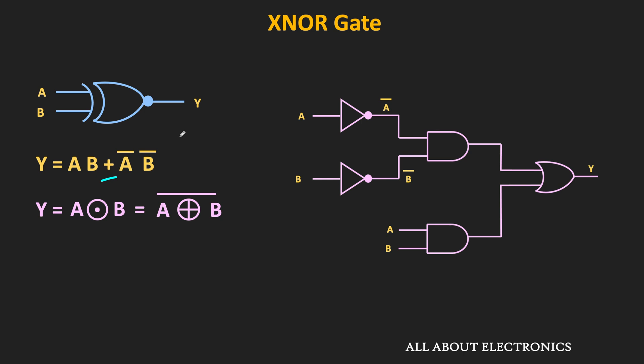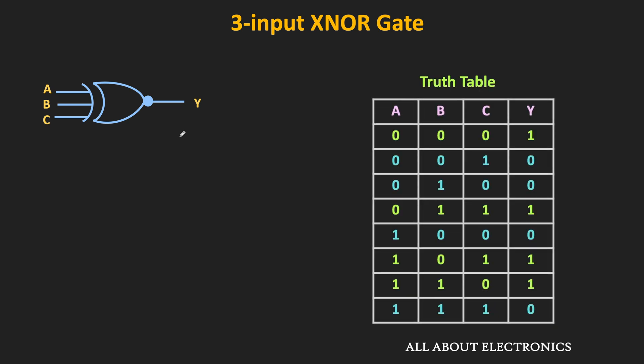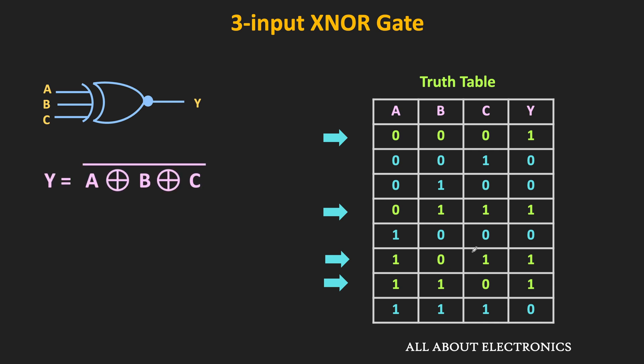Similarly, let us see the three-input XNOR gate. Here A, B, and C are the inputs. The output of the three-input XNOR gate is high when the even number of inputs are high. In the first case, no input is high, while in the remaining three cases, two of the three inputs are high. That means the output of this logic gate is high when an even number of inputs are high.